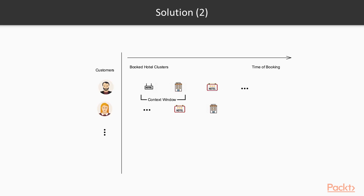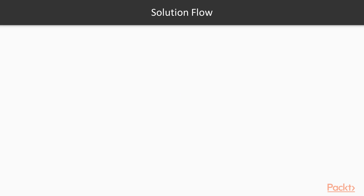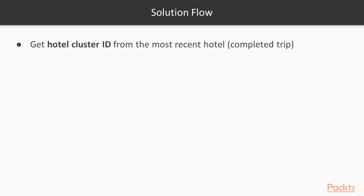This figure depicts booked hotel cluster IDs per customer in the skip-gram model. Each row represents a customer and the sequence of hotel cluster IDs that he or she booked. Specifically, a customer books a hotel and we derive which hotel cluster ID that hotel belongs to. Hotel cluster IDs that often appear in the same context window will be close to each other in the embedding representation.